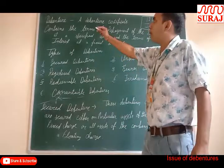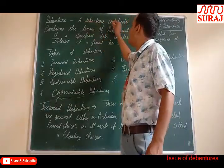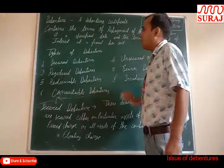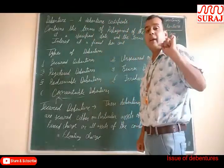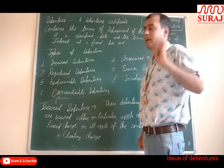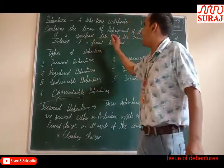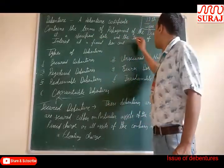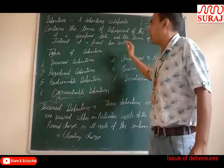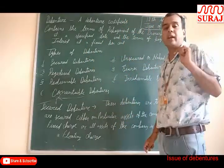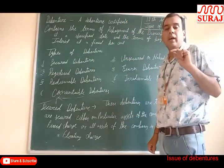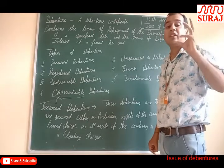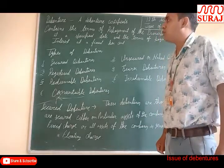A debenture certificate contains the terms of payment of the principal sum at a specified date — meaning the date on which the principal money will be returned — and the terms of payment of interest at a fixed percent. The fixed percent rate of interest is also written on it.